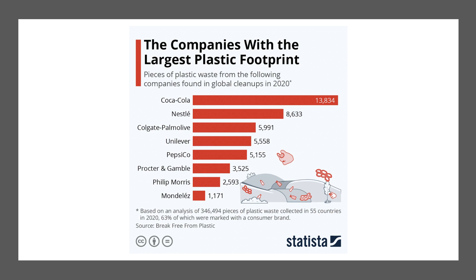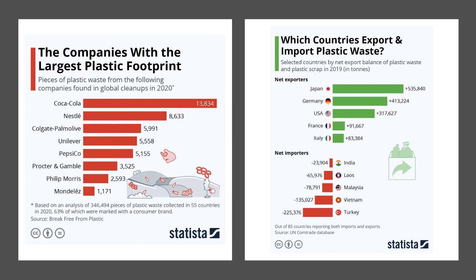A lot of these companies are now coming under quite significant pressure to reduce their plastic footprint. There is a global industry in the exportation and importation of plastic waste for recycling, repackaging, and in some cases dumping. Japan, Germany, and the United States are significant net exporters of plastic, while India, Laos, Malaysia, Vietnam, and Turkey are significant net importers of plastic packaging. There is a huge debate about the externalities of single-use, non-recyclable plastic packaging.